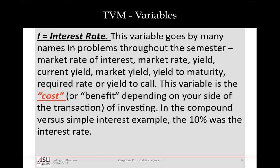I is the interest rate, and it has a lot of different names. Sometimes we'll call it the market rate of interest, sometimes market rate, we'll call it yield, current yield, market yield, yield to maturity, and yield to call. Those terms with yield are usually when we're talking about bonds or other debt instruments. Market rate of interest, market rate, and required rate can be stocks or bonds. Required rate is usually just for stocks. This is the cost or the benefit of investing — so 10% interest rate is the I.